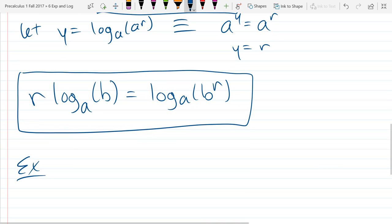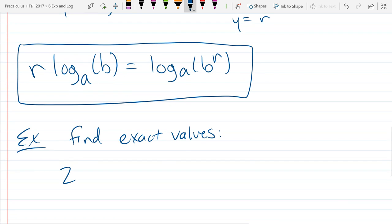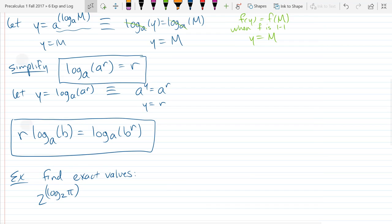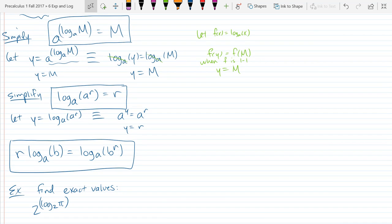So we're going to use these properties to find the exact values. So this is 2 raised to the log base 2 of pi. Pi is just a letter. So I want you to simplify this down. One of the identities in a box will be useful here. It'll be one of these three identities on the board. So which identity do we use? 1, 2, or 3? 1. So use number 1. We got the base 2 matches the base 2. So all that stuff cancels out to just pi.